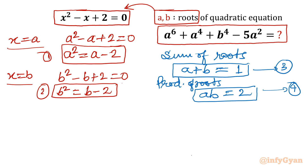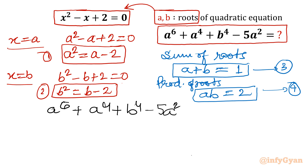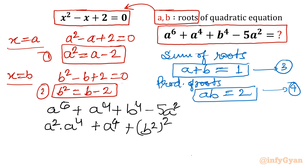Now let us write our expression: a⁶ plus a⁴ plus b⁴ minus 5a², and we have to simplify this. I will split a⁶ as a² times a⁴, plus a⁴, and write b⁴ as (b²)², then minus 5a². We will substitute values one by one.